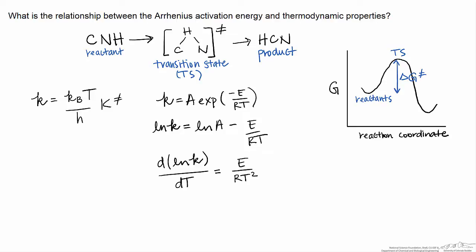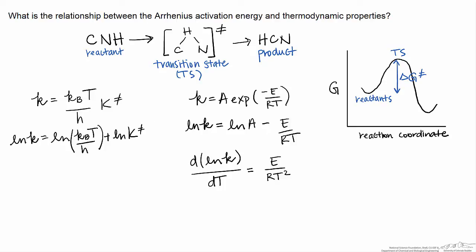We're going to take the same kind of derivative with respect to the TST rate constant. First we take the log of both sides, then take the derivative with respect to temperature. For the first term, when we take the derivative of the natural log we get 1 over the argument — h over k_B T — and multiply by the derivative of the argument with respect to temperature, which is k_B over h. These terms cancel, and we're left with just 1 over T from that first term in the sum.